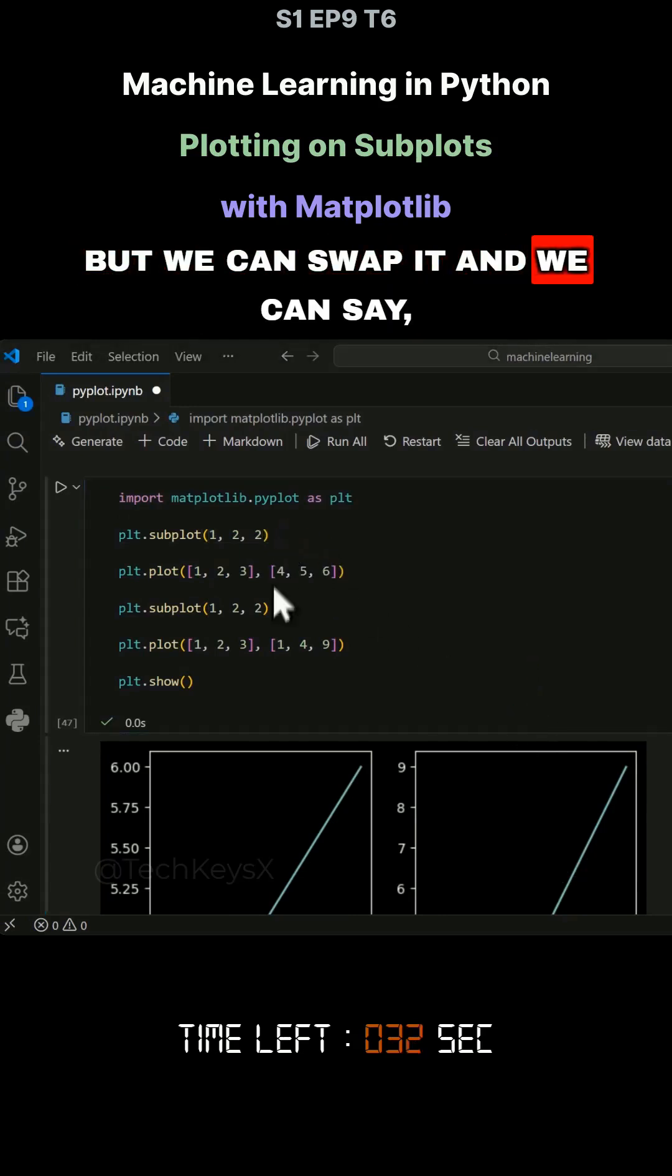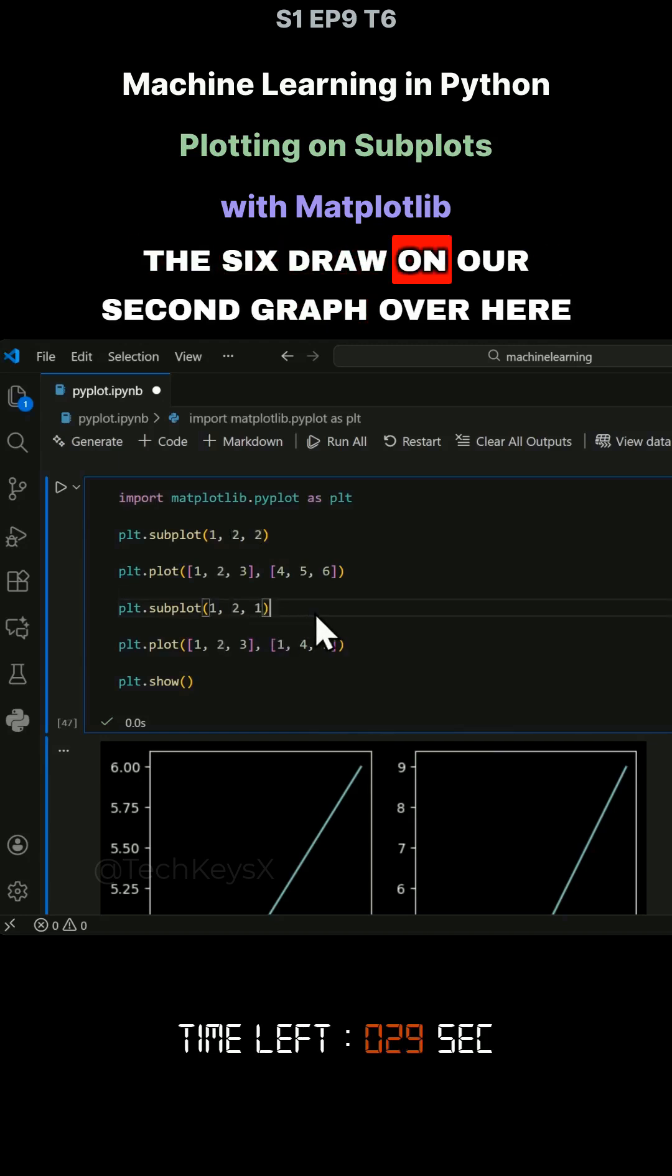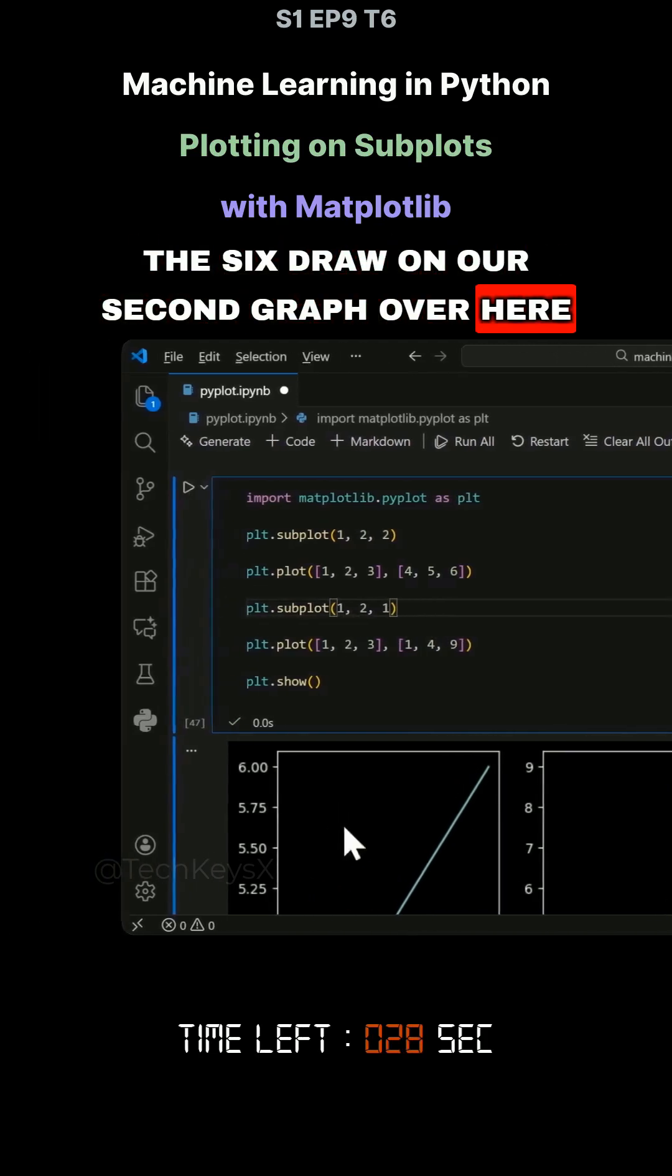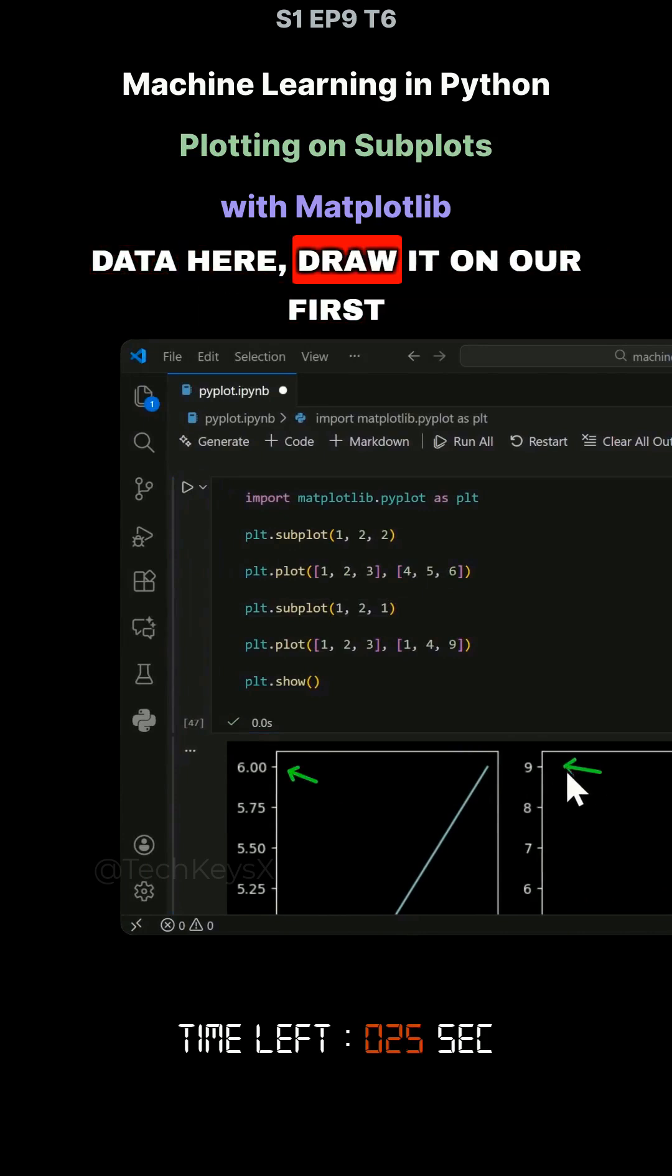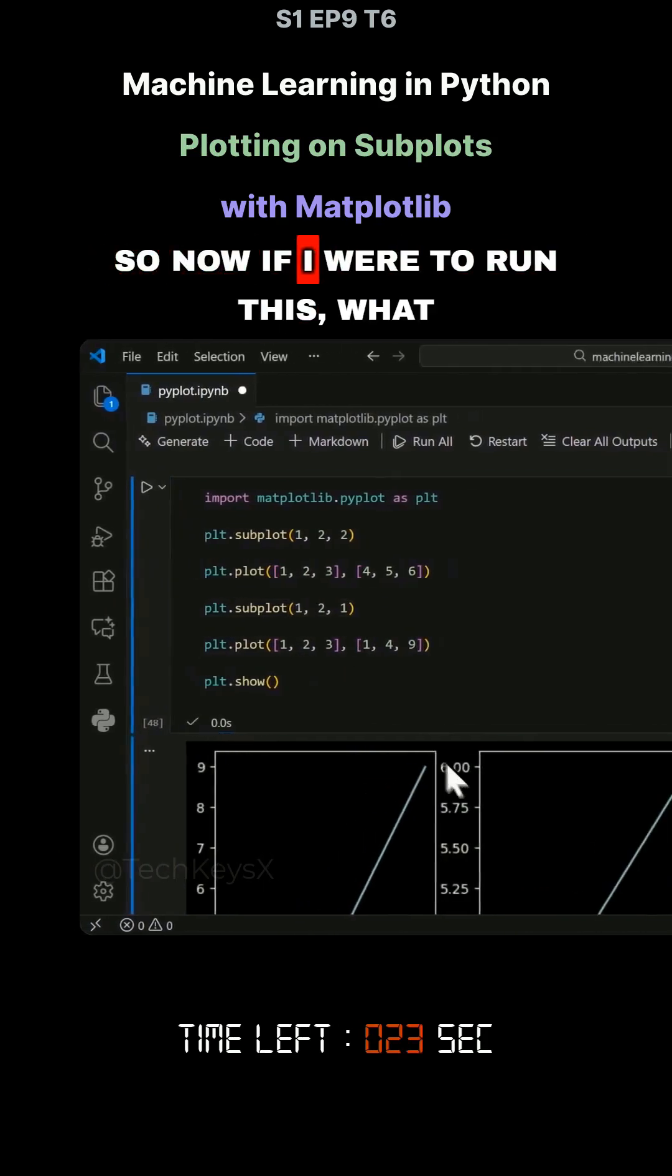But we can swap it and we can say actually this data, the one with the six, draw on our second graph over here. So we will use two over here and this data here draw it on our first. So now if I were to run this,